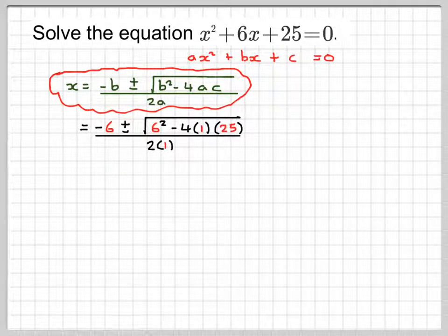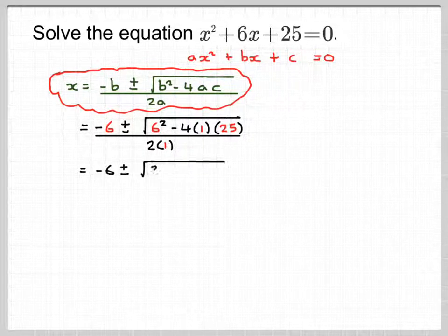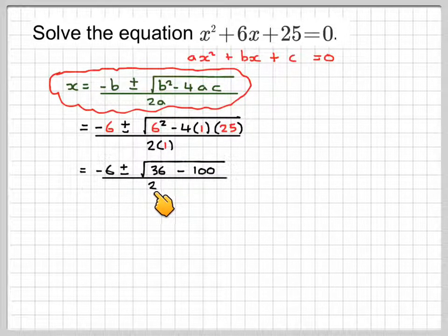Substituting, we're going to get minus 6 plus or minus 6 squared minus 4 times 1 times 25 divided by 2. Then we've got minus 6 plus or minus the square root of 36 minus 100 divided by 2.